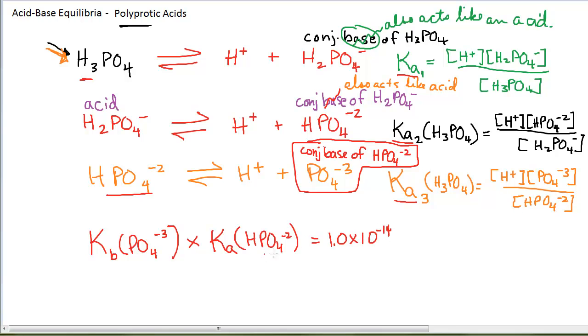Well, HPO4-2 is not going to be listed in a table. It will be listed as the Ka3 for phosphoric acid. This Ka value is the equilibrium constant for this acid reacting. And so I would solve for the Kb for the phosphate ion.